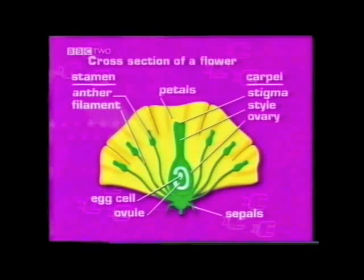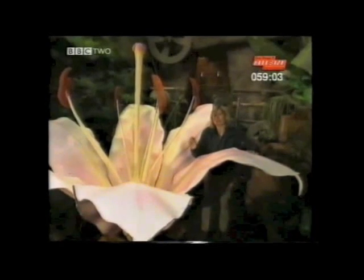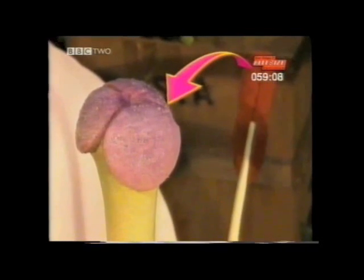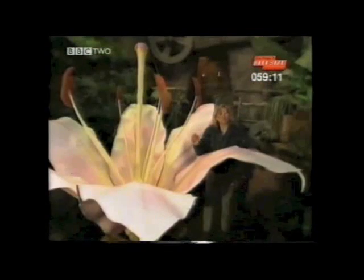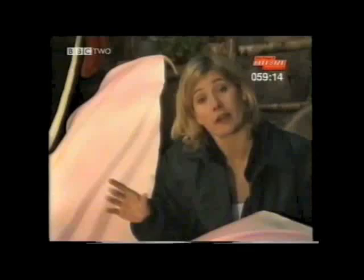So how does the male part of the flower fertilise the female part? In flowering plants, sexual reproduction takes place in two stages. The male pollen has to reach the female stigma, and this first part of the process is called pollination.